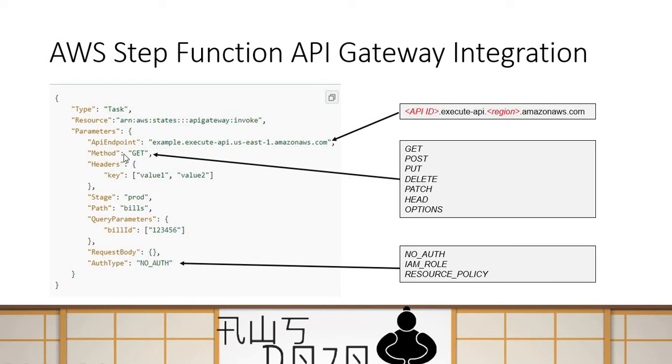Your API endpoint, method, and authorization type are the three important parameters you must configure if you are calling your API.